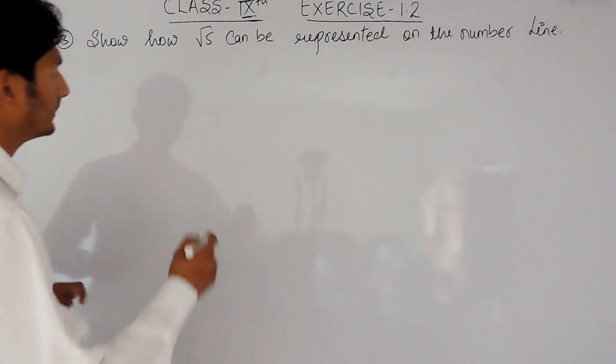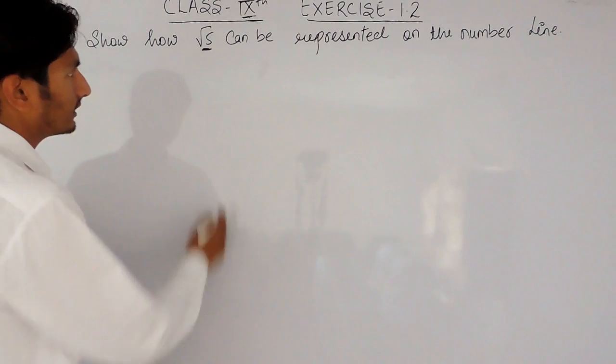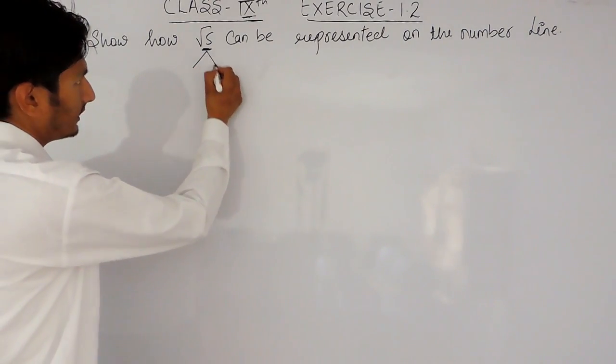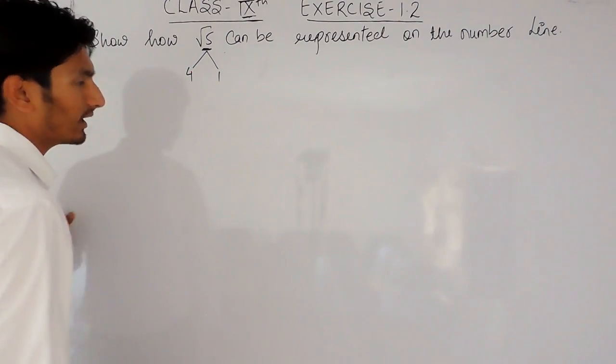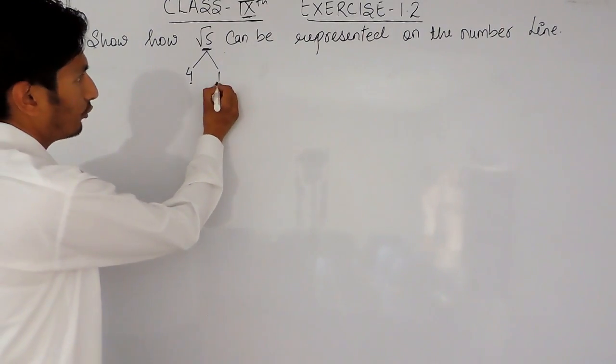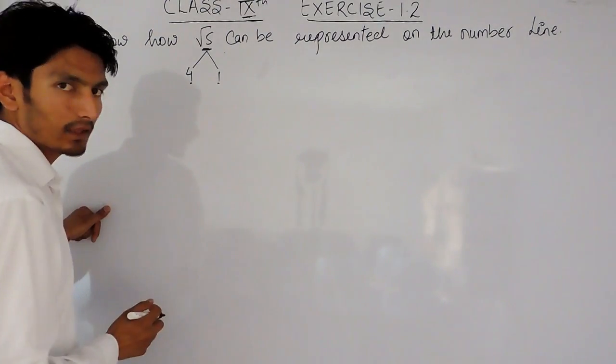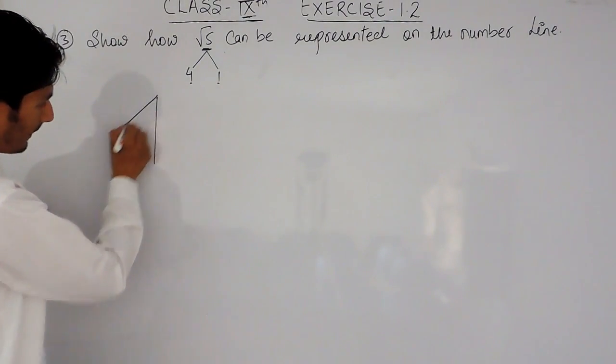Now for that, first of all what we have to do is, we have to divide this 5 into 2 such numbers that are perfect square numbers. Okay, so 5 can be converted into 4 plus 1 and after that I have to apply Pythagoras theorem.